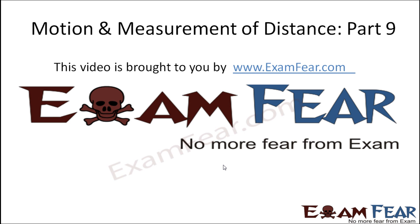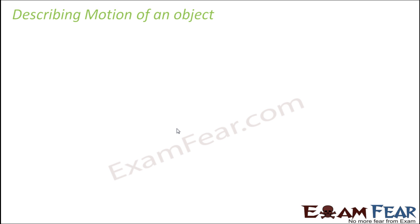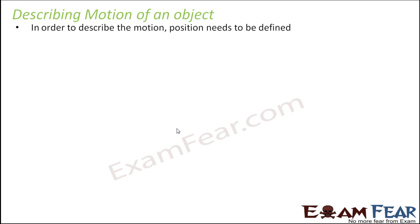This video on motion and measurement of distance part 9 is brought to you by examfear.com. Whenever we have to describe the motion of an object, it is very important to describe its position, because motion is the change in position with time. If we are not sure of the position of that object, how can we say if the object is in motion or not?